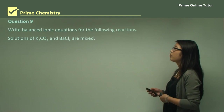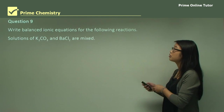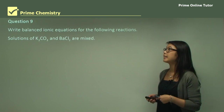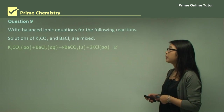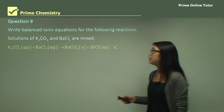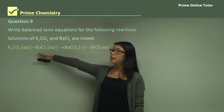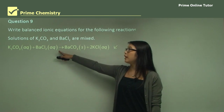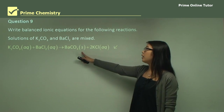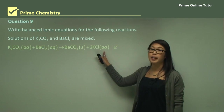Question nine: write a balanced ionic equation for the reaction of potassium carbonate and barium chloride solutions mixed together. This asks for a balanced ionic equation — meaning it includes spectator ions with charges. We have both in aqueous solution (AQ). Mixing gives the solid precipitate barium carbonate, plus the spectator ions potassium and chloride in aqueous solution.